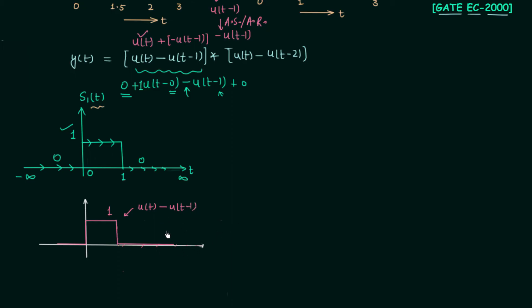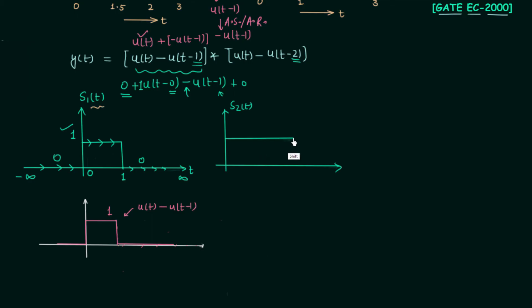It is up to you which method to use — you will get the same result, but I suggest using the first method in competitive examinations to save time. Now, following the same process, I will plot s2(t) = u(t) - u(t-2). The only difference from signal 1 is that in place of 1 we have 2, so simply extend the non-zero region of the waveform up to t equal to 2. The width of the first pulse is 1 and the width of the second pulse is 2.